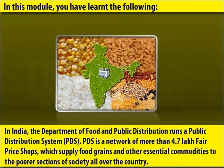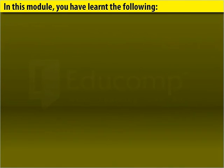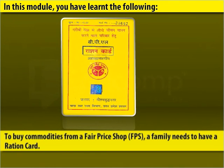In India, the Department of Food and Public Distribution runs a Public Distribution System, PDS. PDS is a network of more than 4.7 lakh fair price shops which supply food grains and other essential commodities to the poorer sections of society all over the country. To buy commodities from a fair price shop, FPS, a family needs to have a ration card.